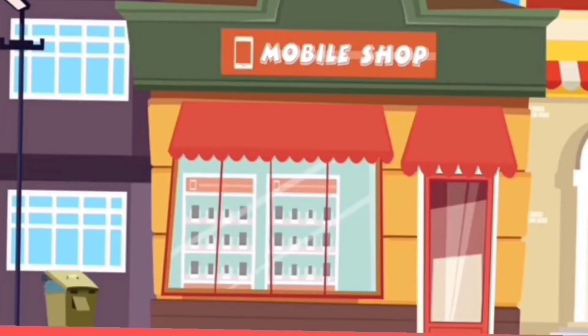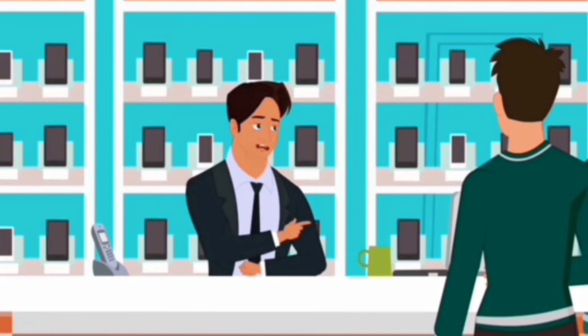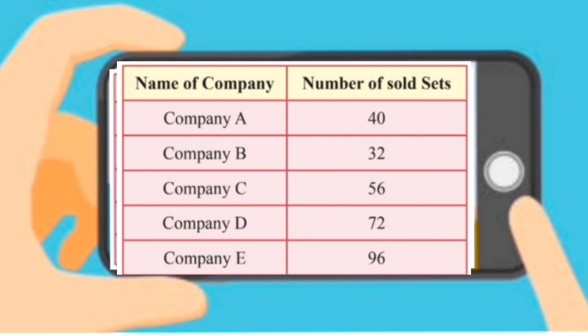Dear students, at a mobile phone shop, our shopkeeper sold mobile phone sets of different companies. Let's see how many mobile phone sets of these companies were sold by him. He sold 40 sets of company A, 32 of company B, 56 of company C, 72 of company D, and 96 sets of company E.